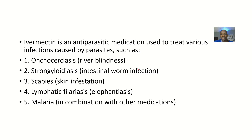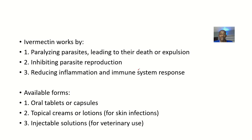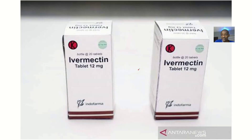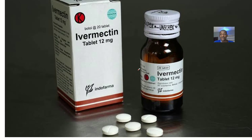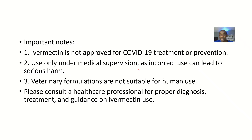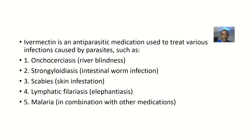How we'll be discussing this drug is we'll talk about different types of disease conditions that this drug has a cure for. We'll look at how it works, the available forms, the mechanism of action, the common side effects, then the serious side effects, and some important things to note. For the definition, ivermectin is an anti-parasitic medication — meaning it has an action on parasites — used to treat various infections caused by parasites.